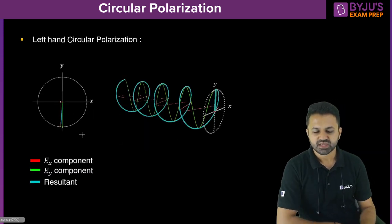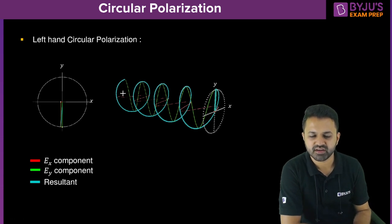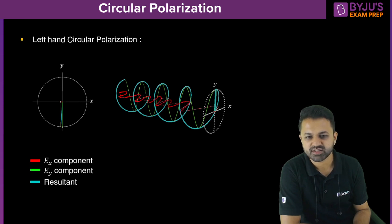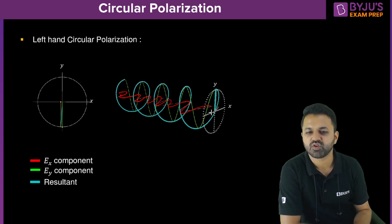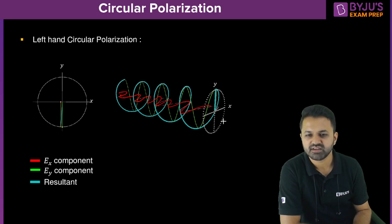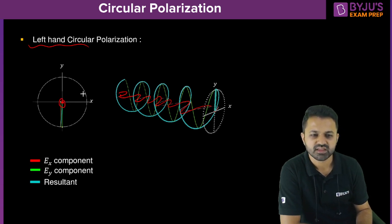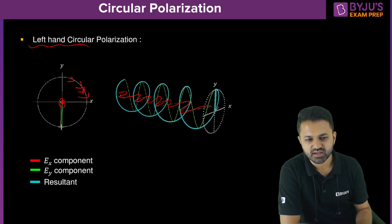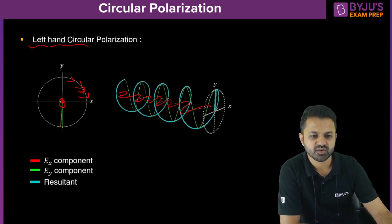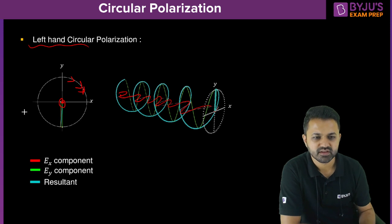This diagram shows the x component in red and the y component in green. When you draw their resultant, you see it rotating — this is left hand circular polarization for a wave traveling in the positive z direction. The blue line shows the resultant rotating in the clockwise direction.